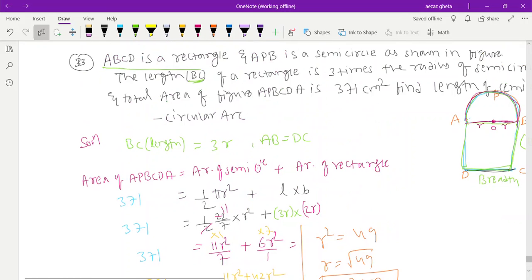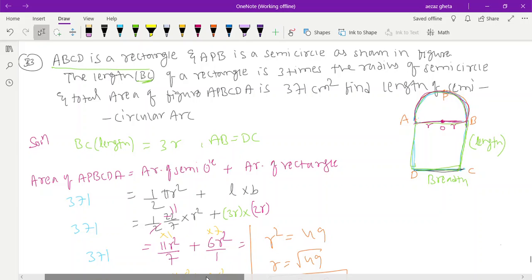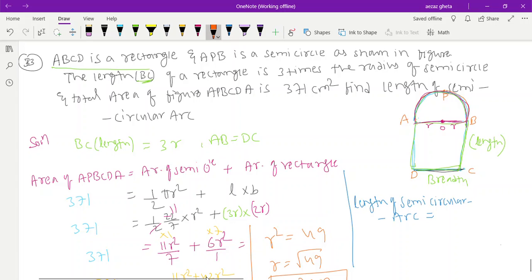To find the length of semicircular arc - the length of semicircular arc equals πr. For a full circle it's 2πr, for half circle it's πr. So 22/7 × radius. We just found radius is 7. The 7s cancel, and the answer is 22 centimeters.